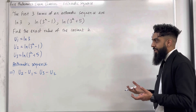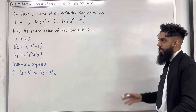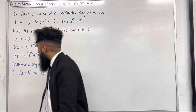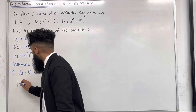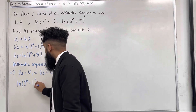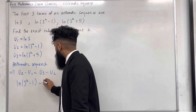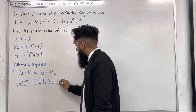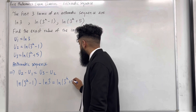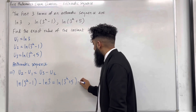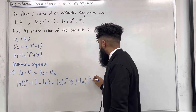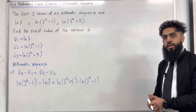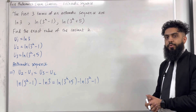Now I can substitute my first, second, and third terms into this equation. I get: ln(3 to the power k minus 1) minus ln3 has to equal ln(3 to the power k plus 5) minus ln(3 to the power k minus 1). So I've generated an equation involving natural logarithms.